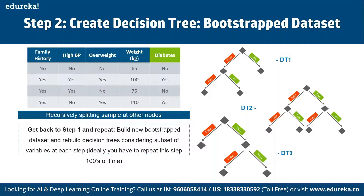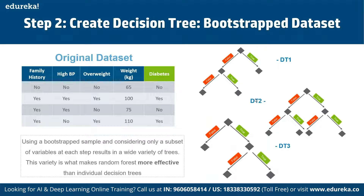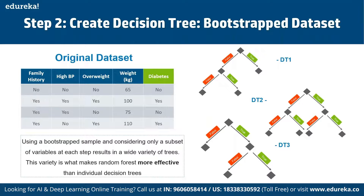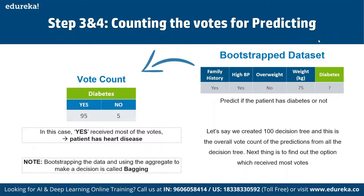We go back to step one and repeat: build a new bootstrap dataset and rebuild decision trees using a subset of variables at each step. Ideally, this step is repeated hundreds of times, creating many decision trees. Using bootstrap samples and considering only a subset of variables at each step results in a wide variety of trees, and this variety is what makes Random Forest more effective than individual decision trees.